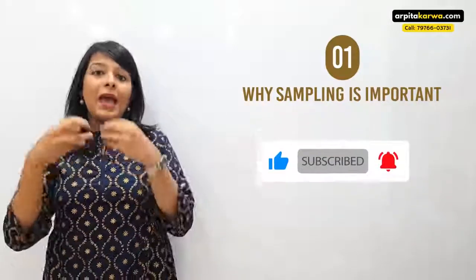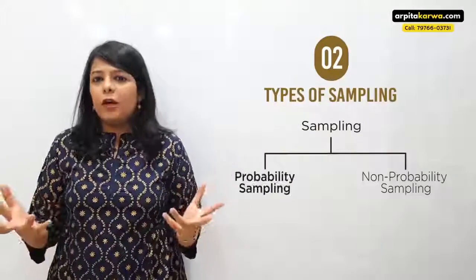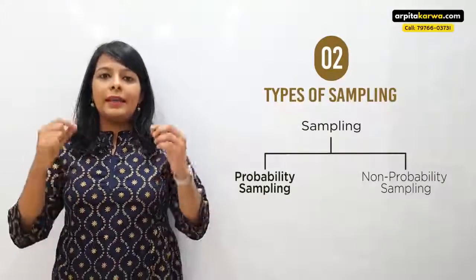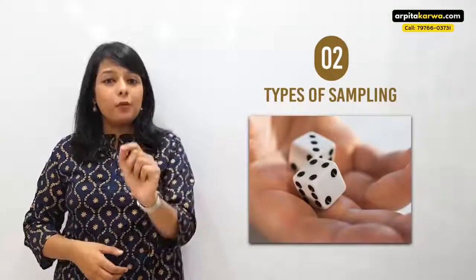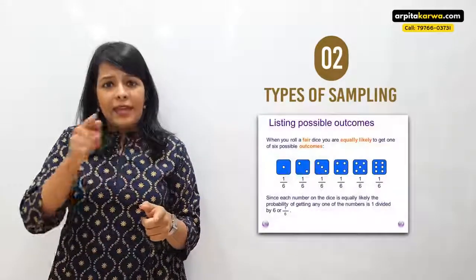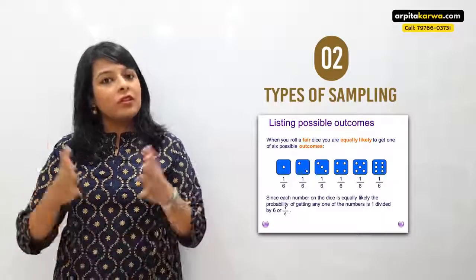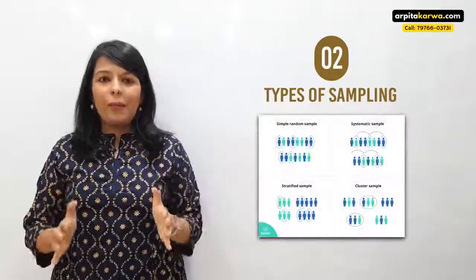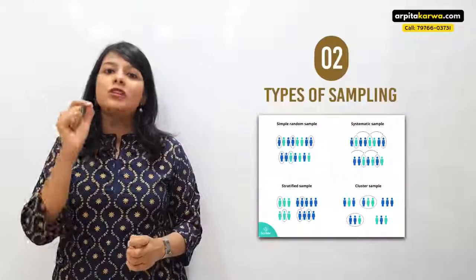When it comes to sampling, there are two kinds of sampling methods. The first is called probability sampling and the second is called non-probability sampling. In probability sampling, every person or item in the group has an equal chance of getting selected — just like throwing a dice, where each number from one to six has a probability of one-in-six. In probability sampling, each candidate in the population has an equal chance of getting selected.